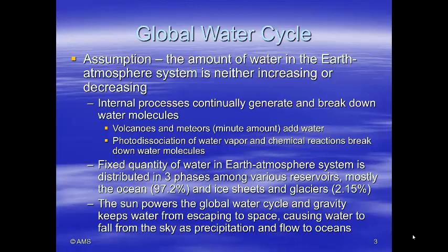This fixed quantity of water in the Earth-atmosphere system is distributed in three phases among various reservoirs. The largest reservoir is the ocean, which holds about 97% of the water. Ice sheets and glaciers hold another 2%. The sun powers the global water cycle, and gravity keeps the water from escaping into space, causing water to fall as precipitation and flow to the oceans.